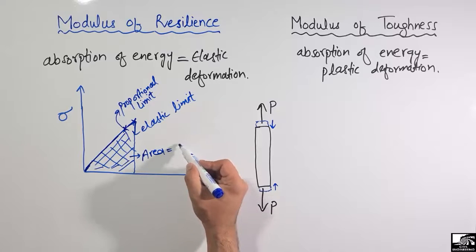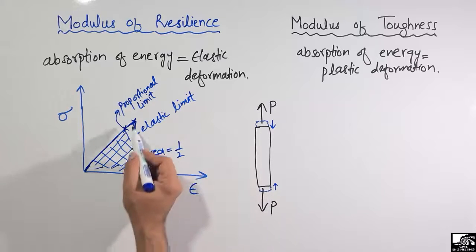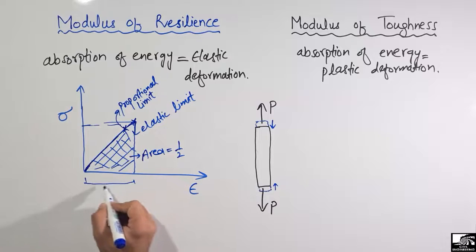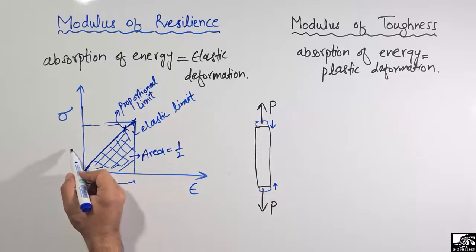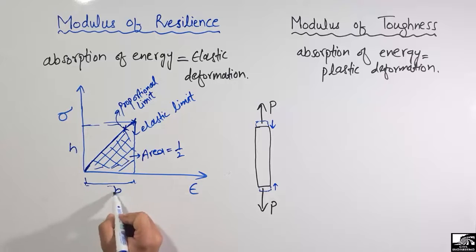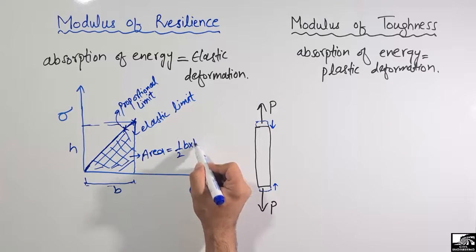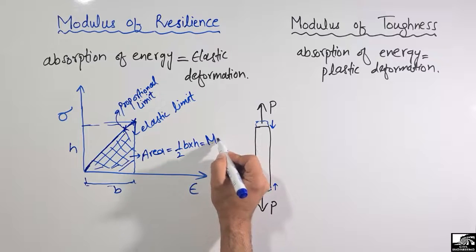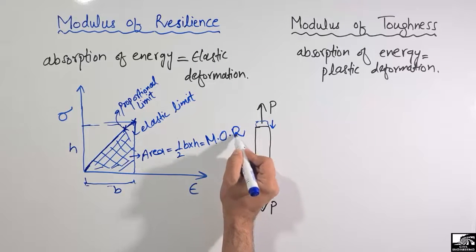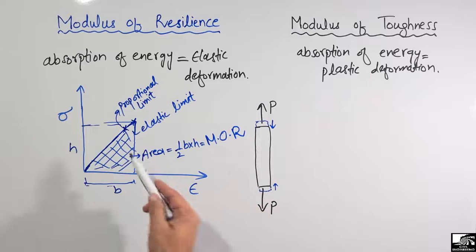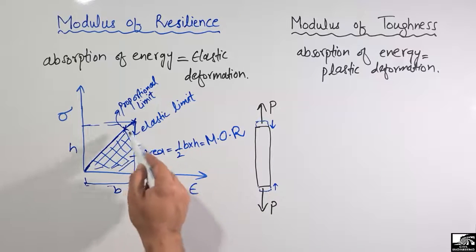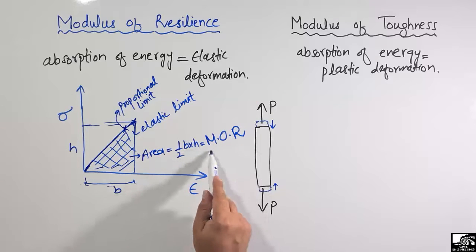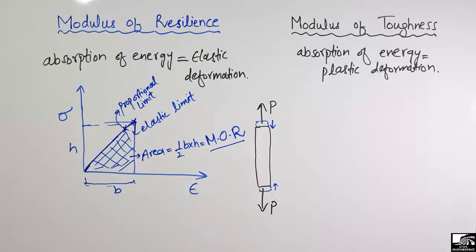If you find the area of this triangle — where the height is the stress and the base is the strain — the area is one-half times base times height. This area of the triangle, or the area under the elastic limit of the material, is known as the modulus of resilience.